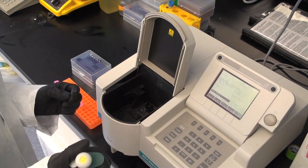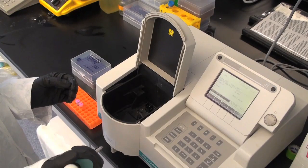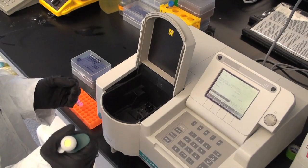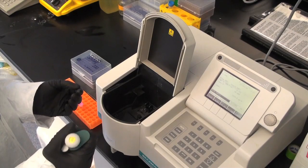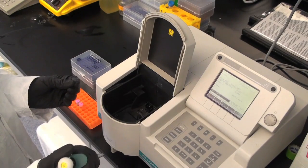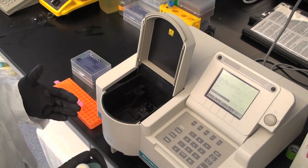Principle: A spectrophotometer consists of two instruments, namely a spectrometer for producing light of any selected wavelength and a photometer for measuring the intensity of light. The instruments are arranged so that the liquid in a cuvette or plate can be placed between the spectrometer beam and the photometer.